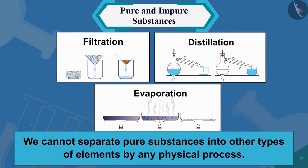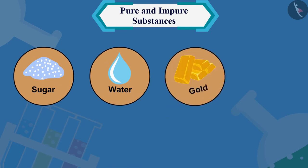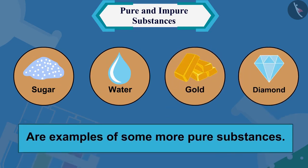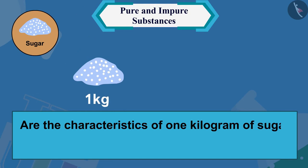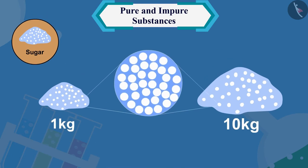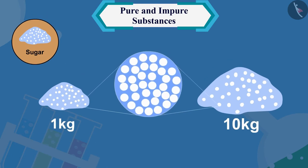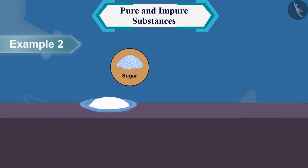Can you think of more examples of pure substances? Yes — sugar, water, gold, and diamond are examples of some more pure substances. Are the characteristics of one kilogram of sugar and ten kilograms of sugar the same? Yes. From this we can conclude that the characteristic properties of pure substances remain the same regardless of quantity.